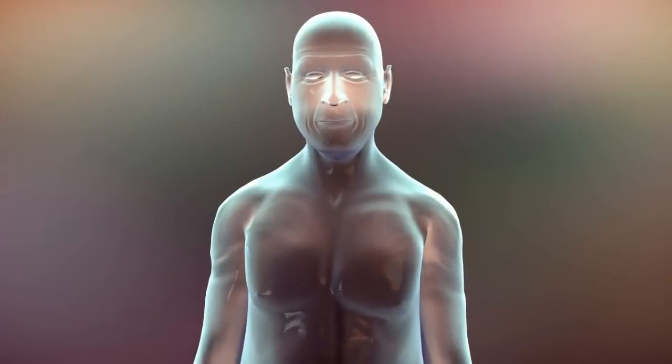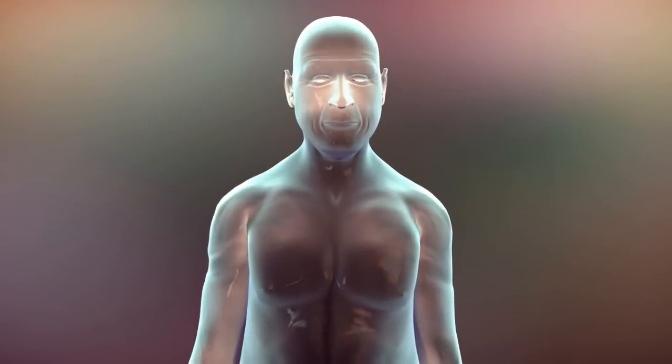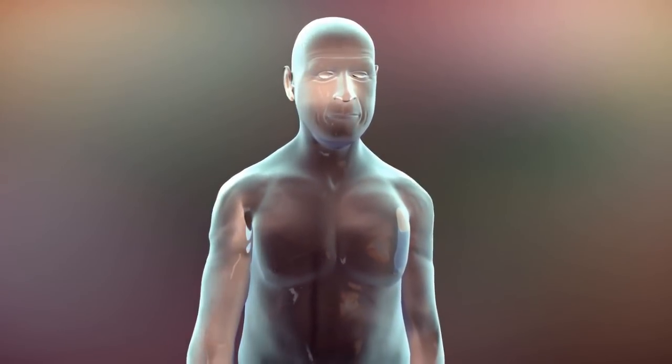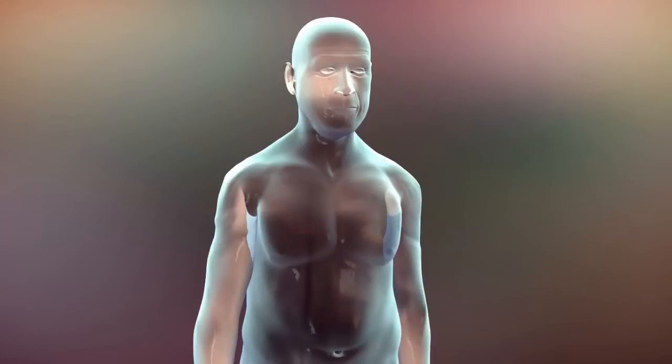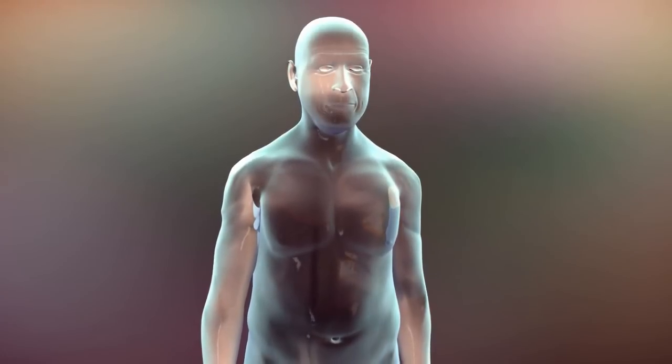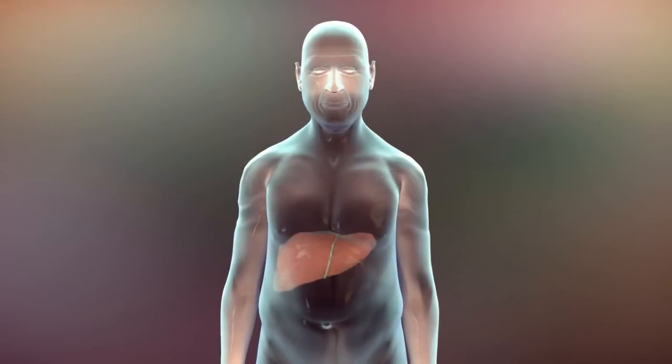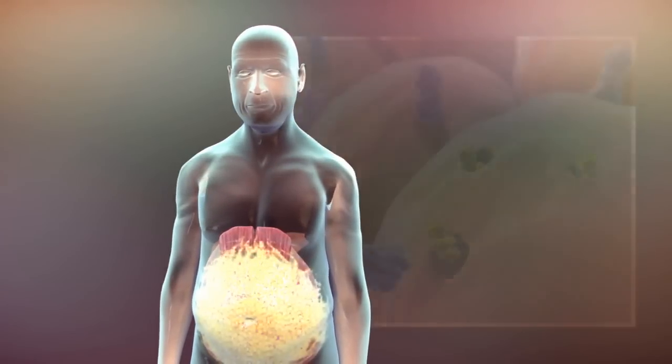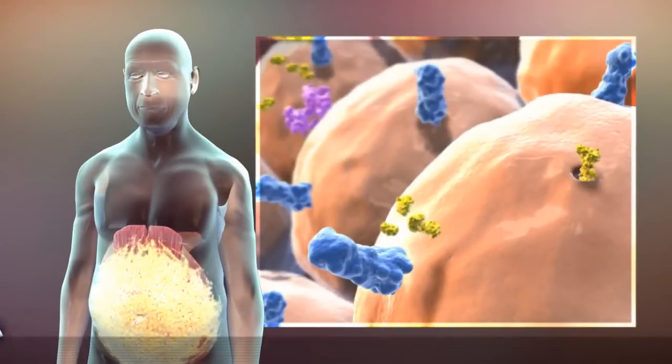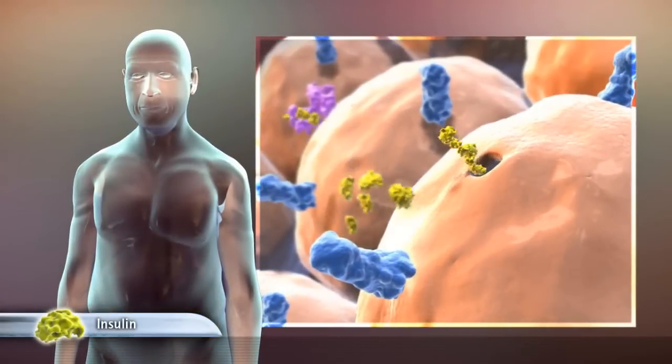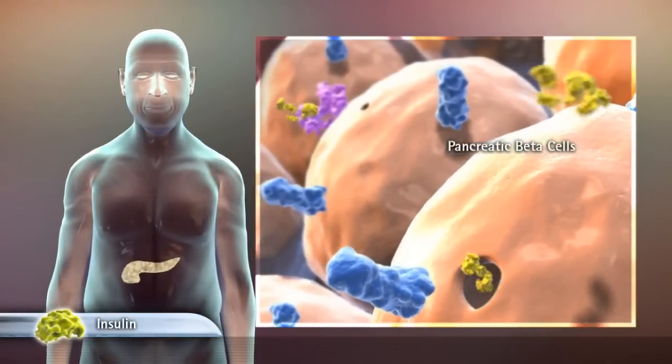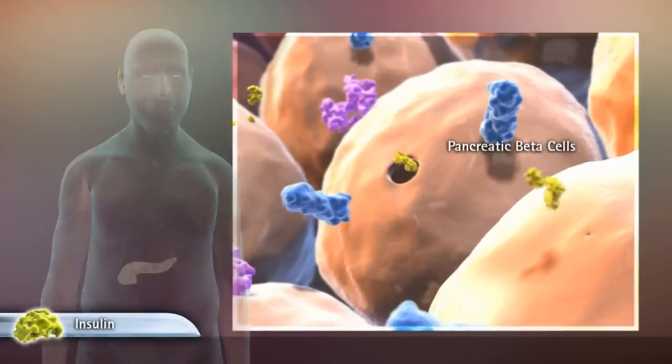Dysregulation of glucose balance resulting in hyperglycemia is a hallmark of diabetes. Increased visceral adiposity in particular has been shown to contribute to the development of insulin resistance in the liver, skeletal muscle, and adipose tissue. Insulin resistance in these tissues results in a compensatory increase in the amount of insulin secreted by the beta cells of the pancreas.